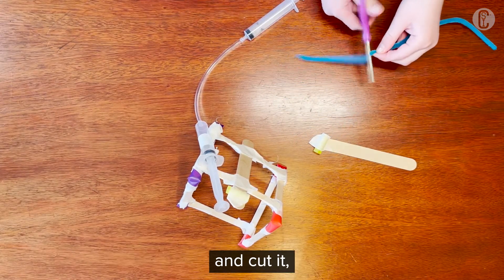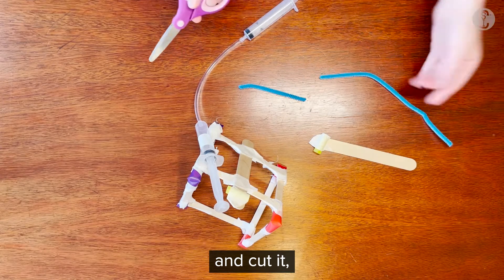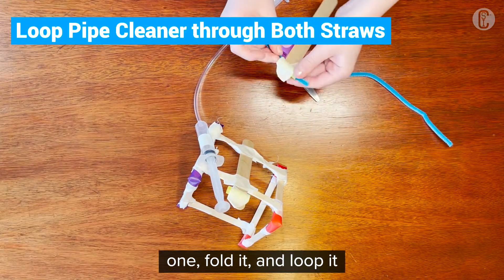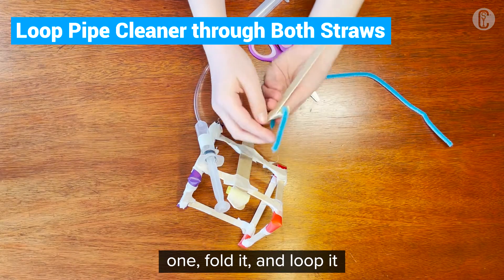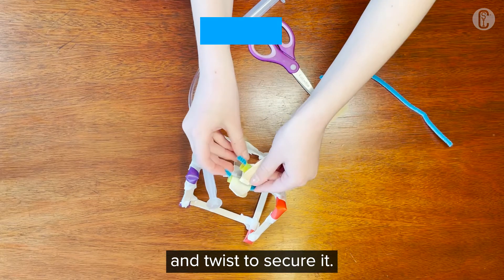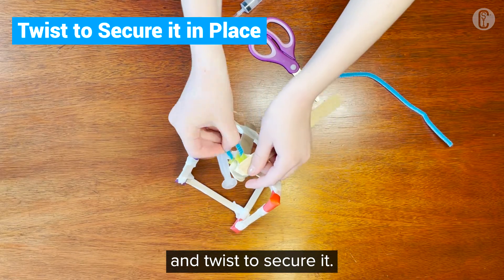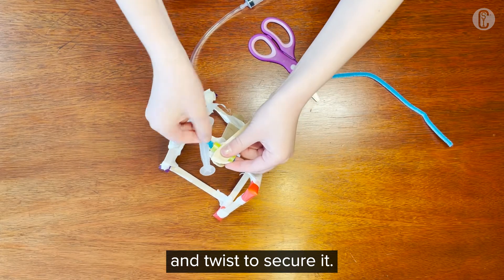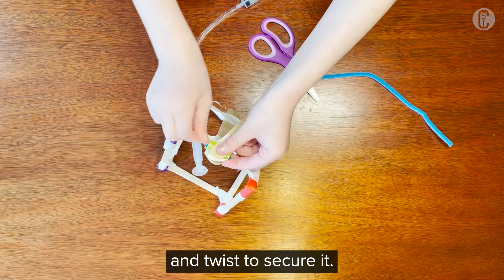And then we will take our pipe cleaner and cut it. Loop it through one, hold it, and loop it through the other, and twist to secure it.